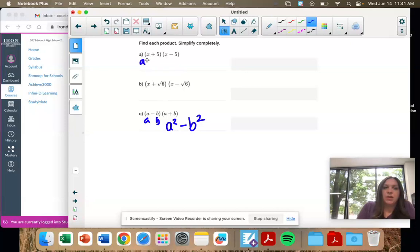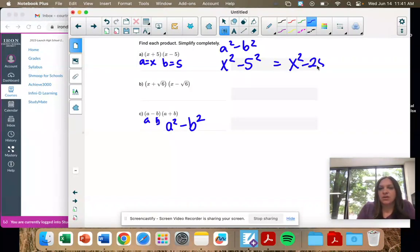So let's come up here. A would be X, B would be 5. Then you would take A squared minus B squared. So X squared minus 5 squared, or X squared minus 25.